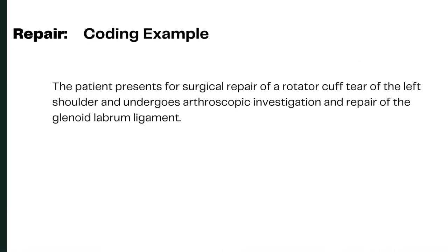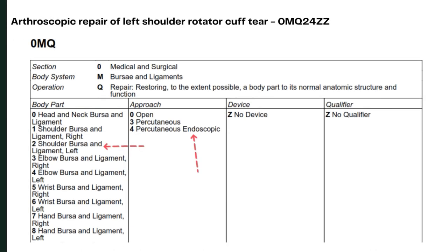Here is an example of coding the root operation repair. The patient presents for surgical repair of a rotator cuff tear of the left shoulder and undergoes arthroscopic investigation and repair of the glenoid labral ligament. This is a left shoulder rotator cuff tear and repair performed arthroscopically. The code is 0, M, Q, 2, 4, Z, Z.